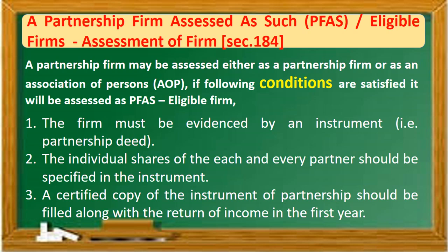As per section 180, the following conditions must be satisfied for a firm to be assessed as a partnership as such — that is, eligible firm. The firm must be evidenced by an instrument. The individual shares of each and every partner should be specified in the instrument.